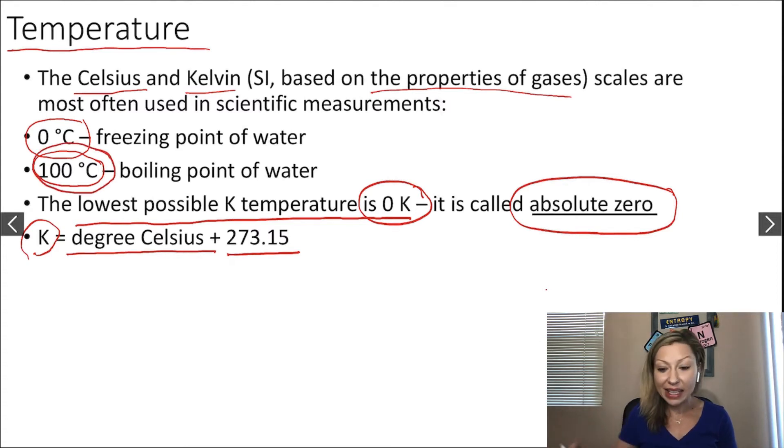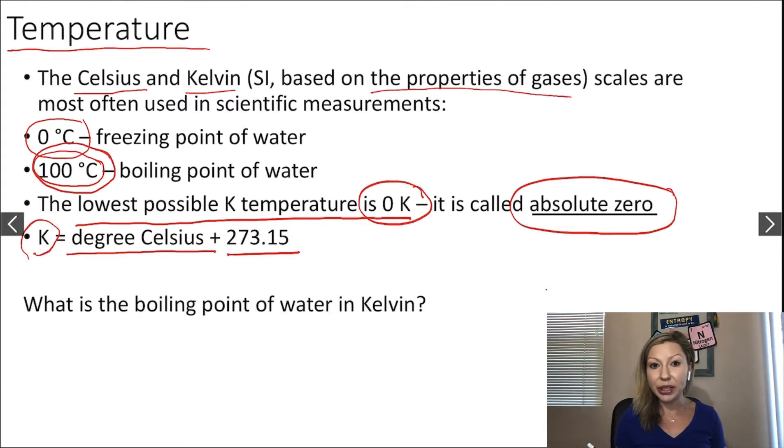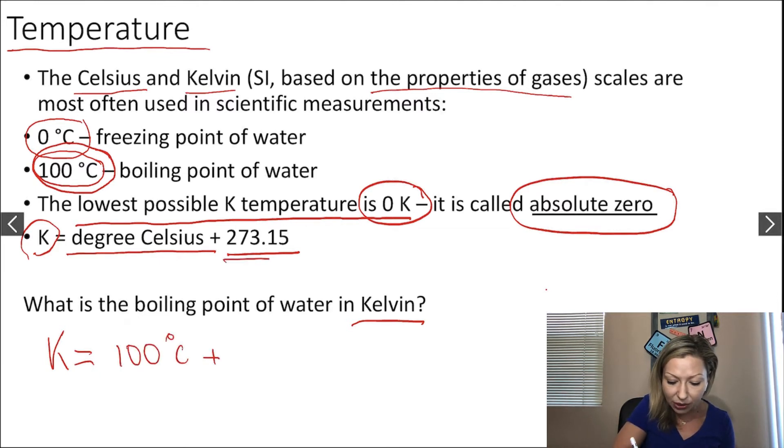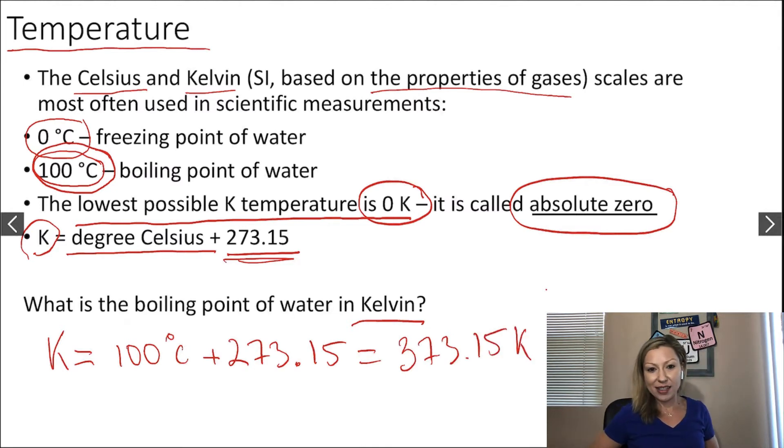Now let's take a look at a question. What is the boiling point of water in Kelvin? We know that the boiling point of water is 100 degrees Celsius. We can convert from Celsius to Kelvin temperatures. In this case, we have to solve for the Kelvin temperature. We know the boiling point is 100 degrees Celsius, and we add 273.15 to it. So the boiling point of water in Kelvin is 373.15 Kelvin.